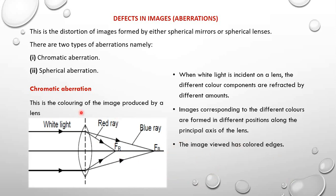That is what we call chromatic aberration. When we see an image with colored edges or coloration, we say chromatic aberration has taken place, and that is experienced when we have spherical lenses or mirrors.